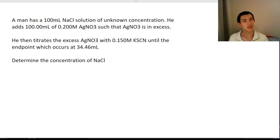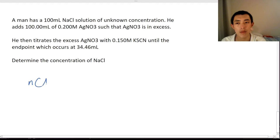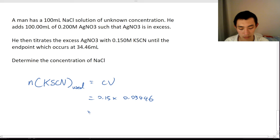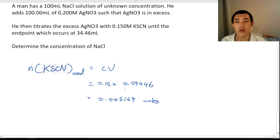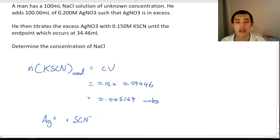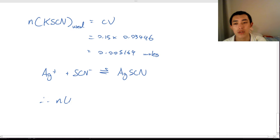The first job I'm going to do is I want to determine the moles of KSCN that we used, which is CV, which is 0.15 times 0.03446, which is 0.005169 moles. That's how many moles of potassium thiocyanate we actually needed to use to get to the endpoint. So if we think about the equation, we have Ag+ plus SCN- which gives us that. So if the moles of thiocyanate that we need to use is that many, therefore the moles of silver that we must have had is equal to this number, 0.005169 moles too, by a one-to-one molar ratio.